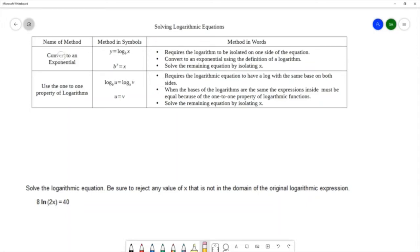So focusing back on the first method, what we're going to do is we're going to convert to an exponential equation using the definition of a logarithm. And then we'll solve the remaining equation by isolating x. But as I said a moment ago, we're required to have our logarithm isolated on one side of the equation. And this 8 does not have our log isolated. So we need to use our properties related to expanding and condensing logarithms to get rid of that 8.